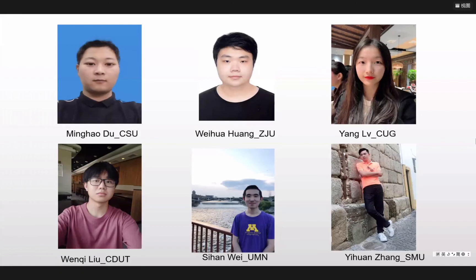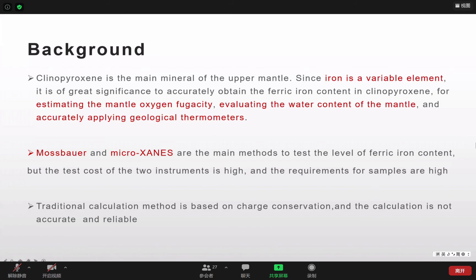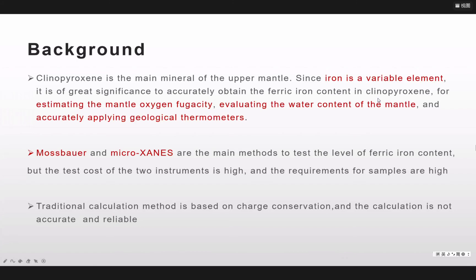First, let's talk about the background of my research. CPX is the main mineral of the upper mantle and since iron is a variable element, it is of great significance to accurately obtain the ferric ion content in CPX for estimating the mantle oxygen fugacity, evaluating the water content of the mantle, and also accurately applying the geological thermometers.